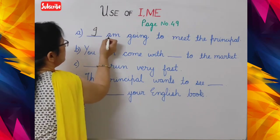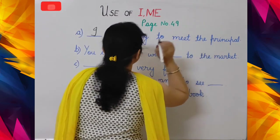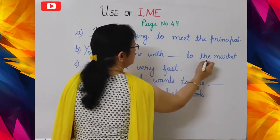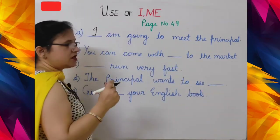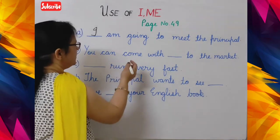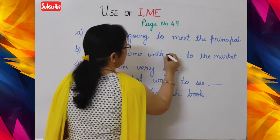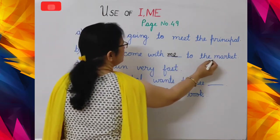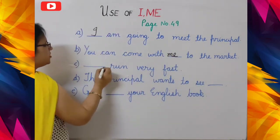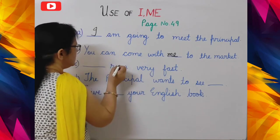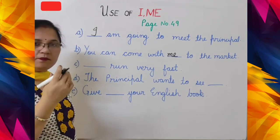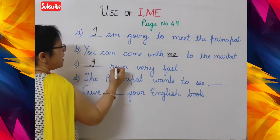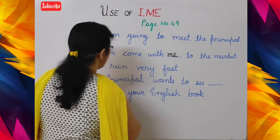Dash am going to meet the principal. Here the verb is 'going', and the blank is before the verb, so the answer is 'I'. I am going to meet the principal. Next: 'You can come with dash to the market' — this blank is after the verb 'come', so the answer is 'me'. You will come with me to the market. Next: 'Dash run very fast' — the verb is 'run' and the blank is before the verb, so 'I' will come here. I run very fast.